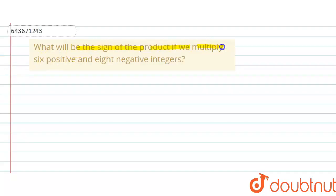what will be the sign of the product if we multiply six positive and eight negative integers? As we know, if two positive numbers multiply with each other, the resultant number is always